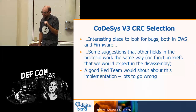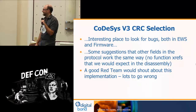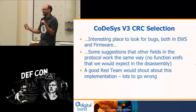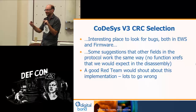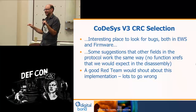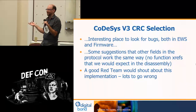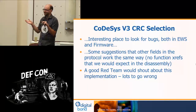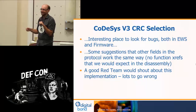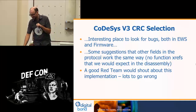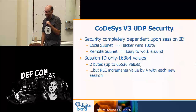I'll probably start looking at this again because I haven't dusted it off in a while, but if somebody else wants to look, go for it. It's a really interesting place to look for bugs. There's a lot of suggestion that other fields in the protocol — like some of the function codes and their arguments — have weird parsers that work the same way. A good red team would have kicked and screamed — but that never happened, I guess.